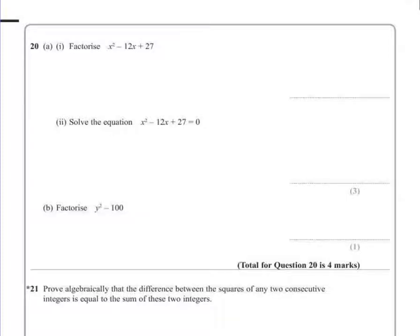Question 20a, part 1. Factorize x squared minus 12x plus 27.